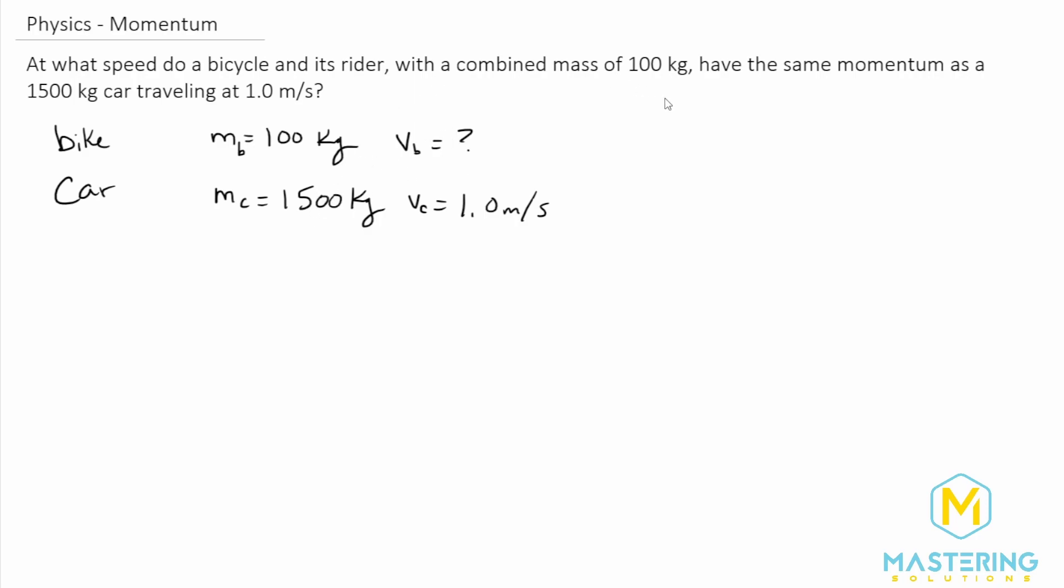So now let's just write down the formula for momentum. We know that momentum is equal to mass times velocity. So they say in the question, what speed does the bike have to go so that the momentum for the car and the bike is the exact same?